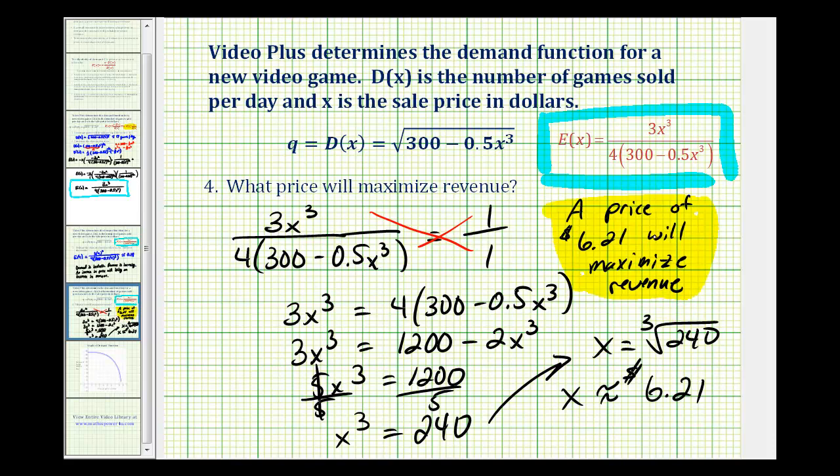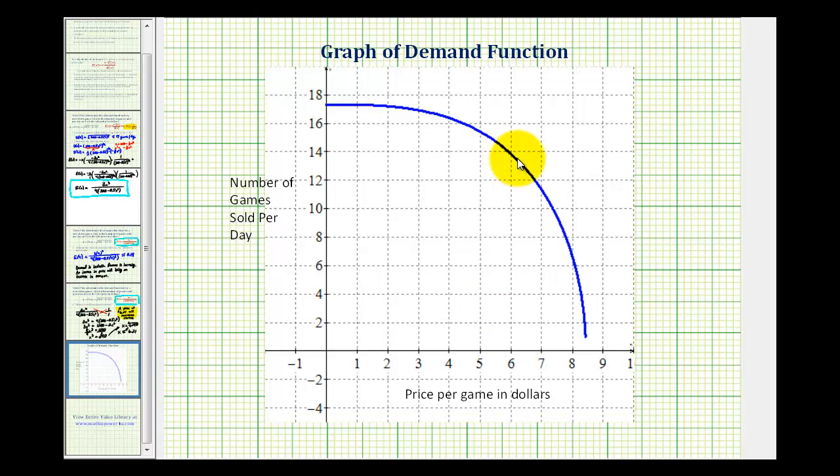Let's go ahead and take a look at where this price is on the graph. $6.21 would be approximately in here, and based upon this demand function, this is the price that would maximize revenue. I hope you found this example helpful.